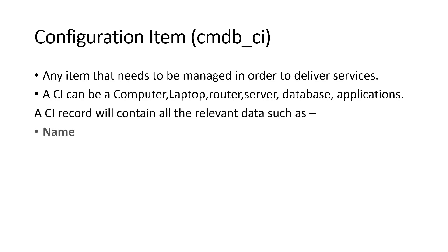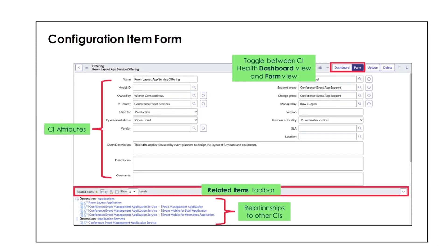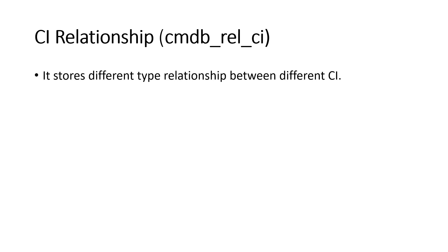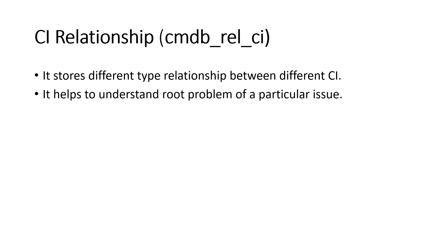A CI record contains attributes like name, owner, model ID, vendor, and more. Looking at an example form — a service offering CI in the cmdb_ci table — you can see many attribute fields and at the bottom related items showing relationship status. The third key table is the cmdb_relationship_ci table, which stores different types of relationships between CIs.